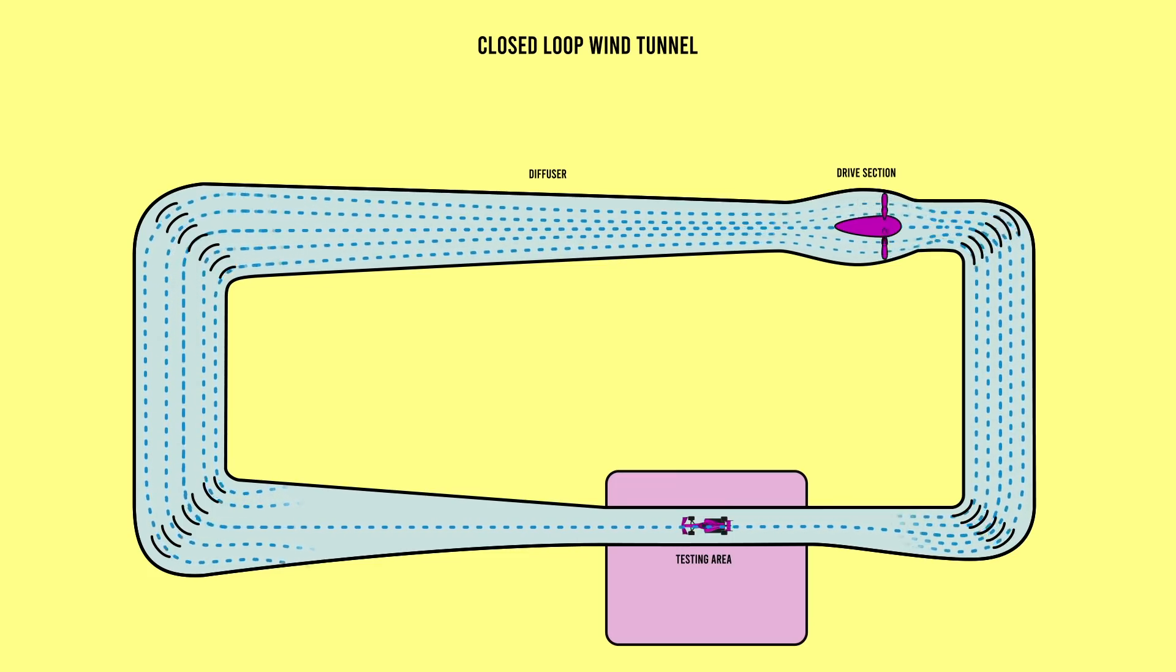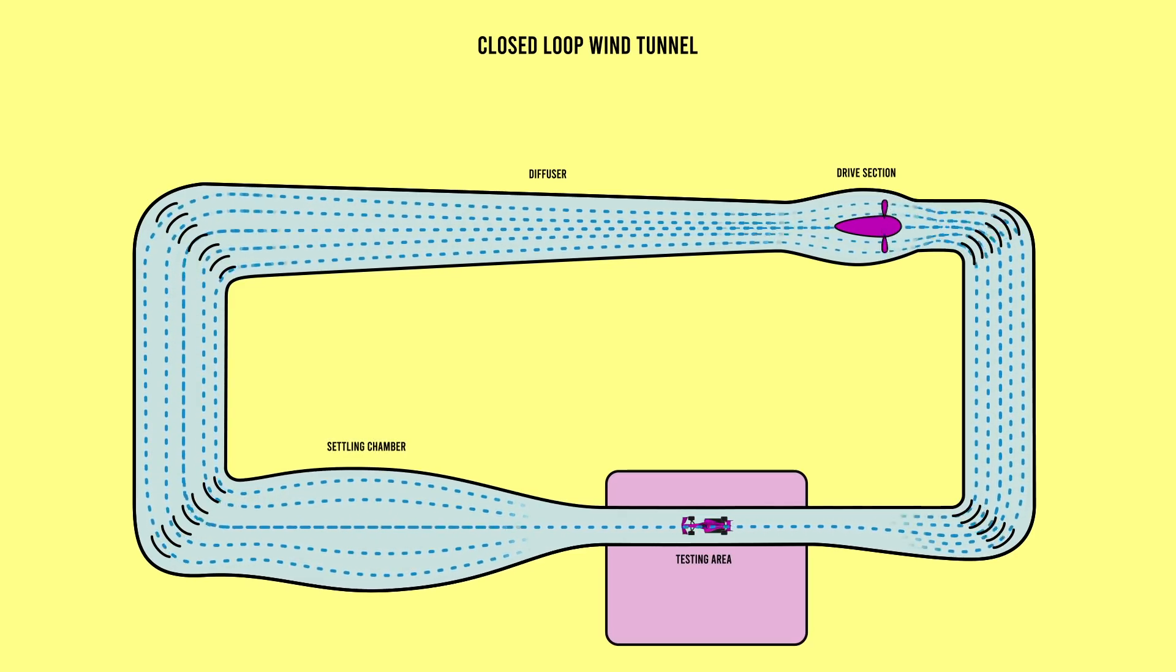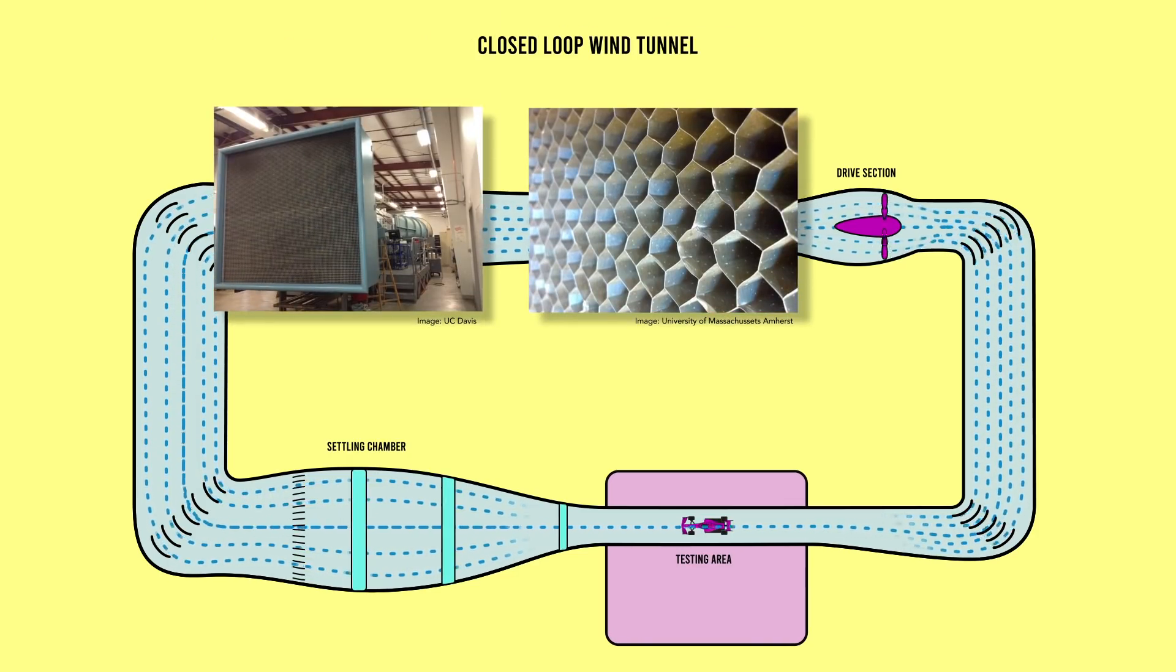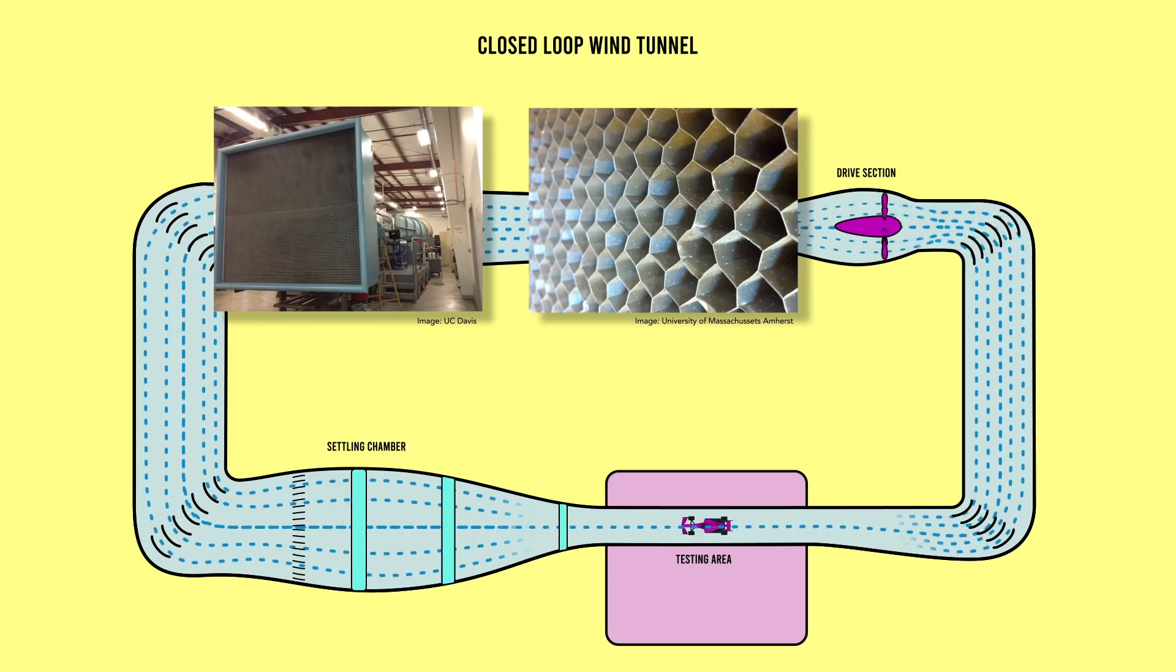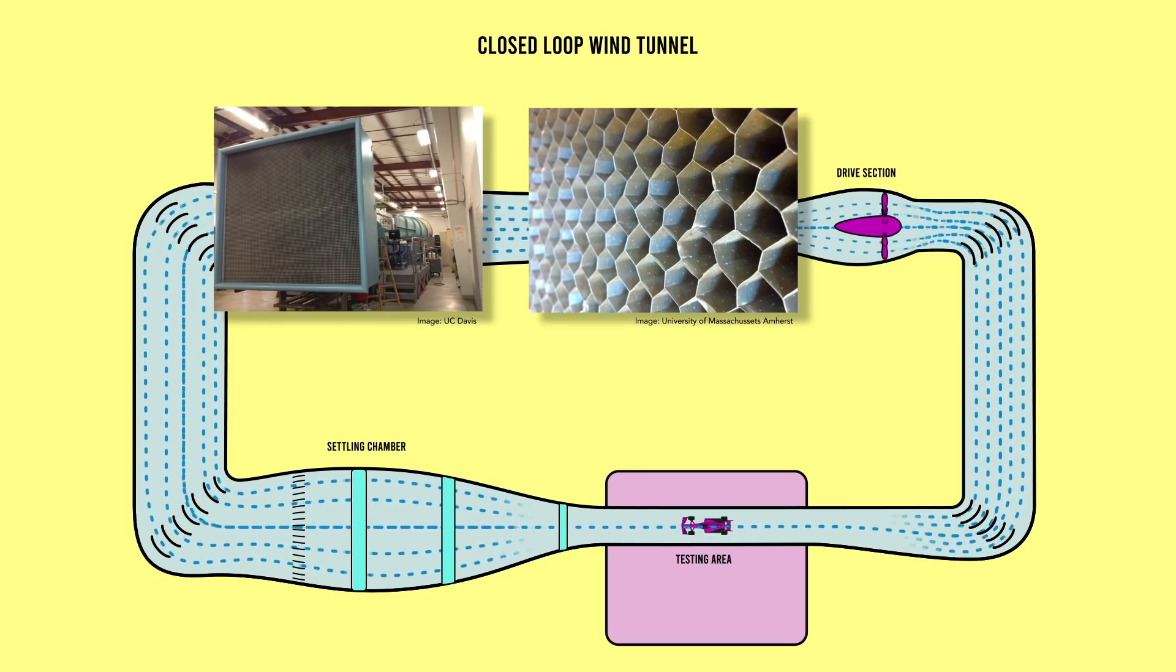Just before the testing section, the airflow passes through a settling chamber. This is a wide passage where the air must pass through veins and special honeycomb meshes of tubes that literally force it to maintain its straight laminar flow and works to iron out any remaining wrinkles.